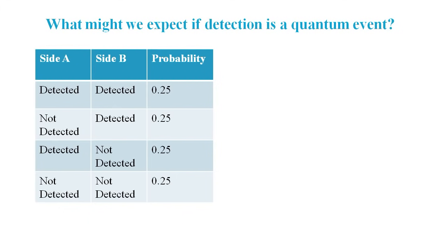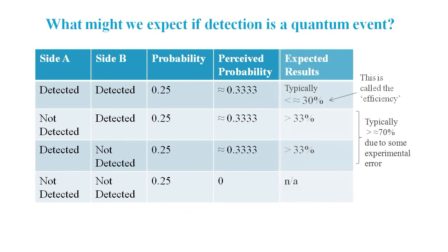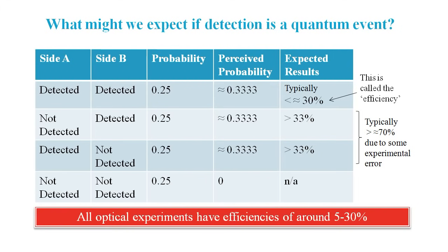So how might we explain this huge number of one-sided detections? Well, if on average there was, say, a 50% chance of detection, then the expected breakdown of detected or not on either side could easily be predicted. But as there's no way to recall cases of not detected at both sides, we're left with elevated perceived probabilities for the three remaining scenarios. Then given that there's bound to be some experimental errors, we end up with the prediction that only about 30% or less of the photon pairs will get detected at both sides. And this prediction matches actual experimental results.